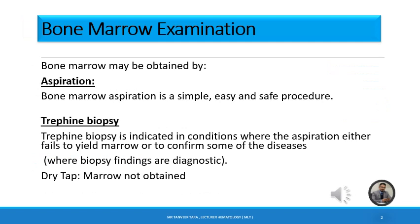Bone marrow examination is essentially done to confirm or rule out hematological disorders like megaloblastic anemias, aplastic anemias, sideroblastic anemias, iron deficiency anemias, leukemias, storage diseases, or even leishmaniasis. It also helps in the evaluation of non-hematological disorders like metastasis. Bone marrow may be obtained by two different procedures.